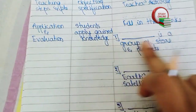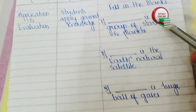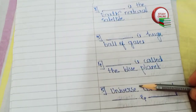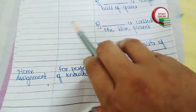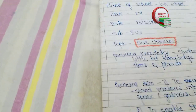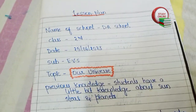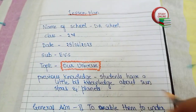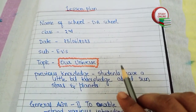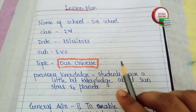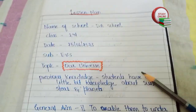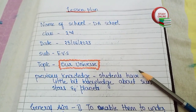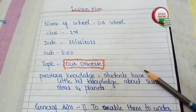This is the last page — Application and Evaluation. Here you can see five questions have been added. For home assignment, the teacher has to give home assignment to students for perfection of their knowledge. This was my lesson plan; the topic was 'Our Universe.' If you liked this video, please do not forget to like, share, and subscribe to my channel. We will meet in the next video with another topic — till then, bye bye and take care.